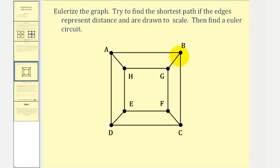So because the edges are drawn to scale and represent distance, when we start duplicating edges, we want to try to duplicate the short edges rather than the longer edges. Let's begin by checking the degree of each vertex. Notice how we have degree three, degree three, three, three, three, three, three, three. Each vertex has degree three.